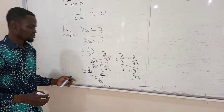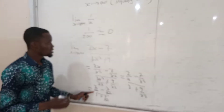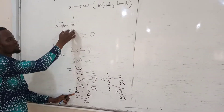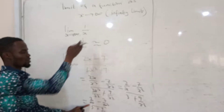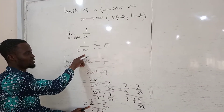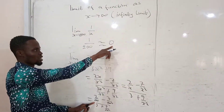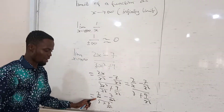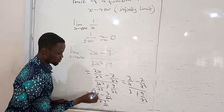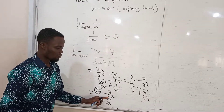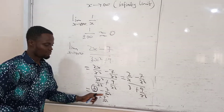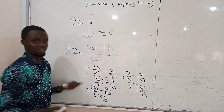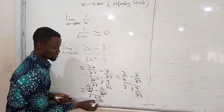From here, you can just put in infinity. So we get 2 over infinity, minus 7 over infinity squared, all divided by 3 plus 9 over infinity squared. Any number — whether it's 10 or 26 — divided by infinity approaches 0. So 2 over infinity is 0, and 7 over infinity squared is also 0. The same applies to 9 over infinity squared, which is 0.